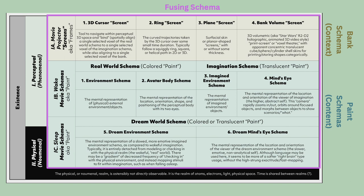We saw this chart in the last class, but I've added some organization. The blue shows the paint schemas — the content of consciousness — and the yellow shows the bank schema — the context of consciousness. All of it together is nested within the fusing schema.